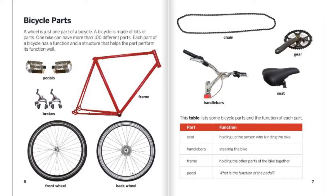So in a bicycle we have pedals, brakes, front wheel, back wheel, frame, handlebars, chain, gear, and seat.